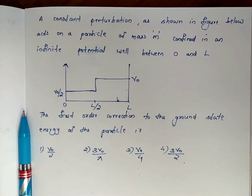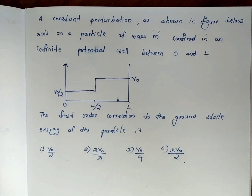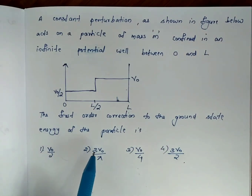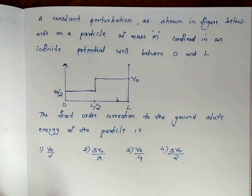A constant perturbation is applied to a particle of mass M confined in an infinite potential well between 0 and L. The first order correction to the ground state energy of the particle — the options are: V0 by 2, 3V0 by pi, V0 by 4, or 3V0 by 2.